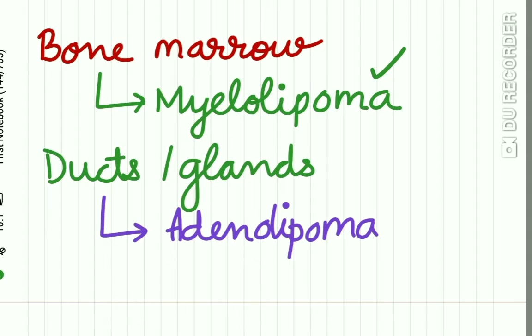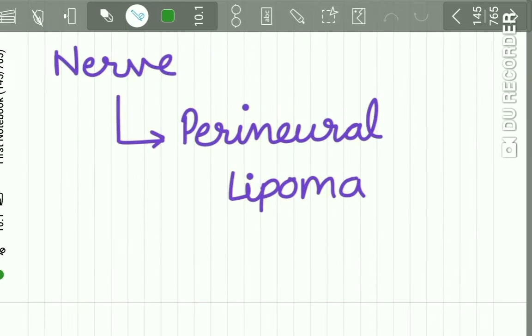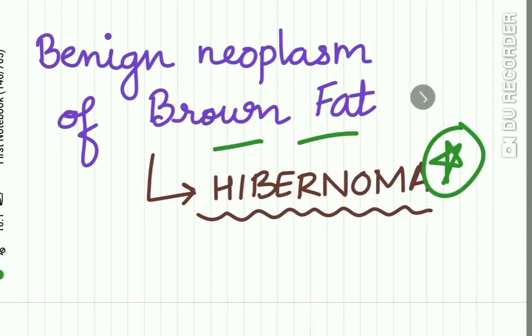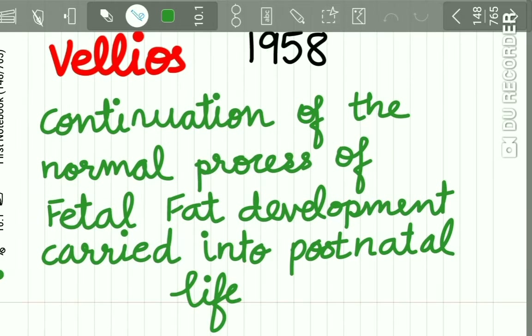If lipoma occurs in bone marrow, it is called myelolipoma. If it occurs in the ducts of glands, it is called adenolipoma. If in a nerve, it is called perineural lipoma. A benign neoplasm of brown fat is called hibernoma. All of these are important MCQ points you should know by heart.